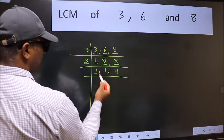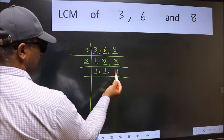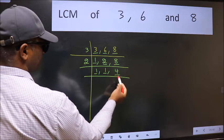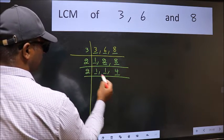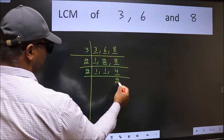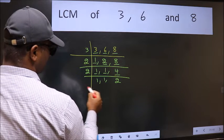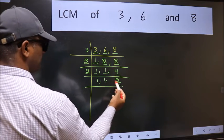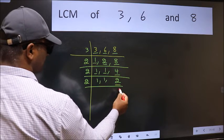Now we got 1 here and here, so focus on to the next number 4. 4 is 2 times 2, which is 4. Now here we have 2. 2 is a prime number, so 2 wants 2.